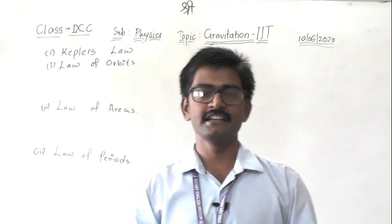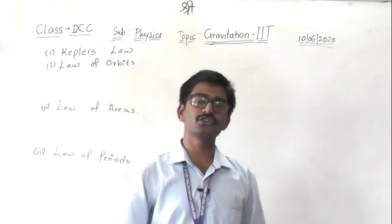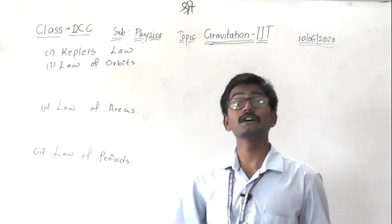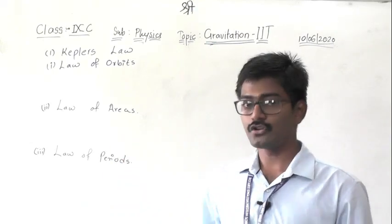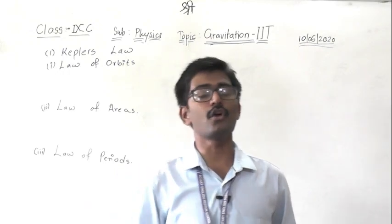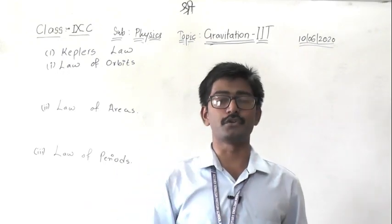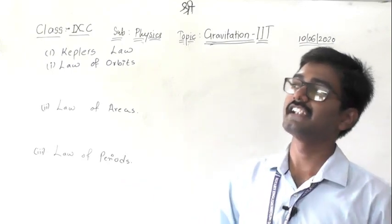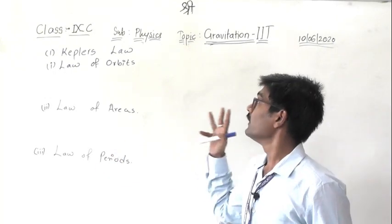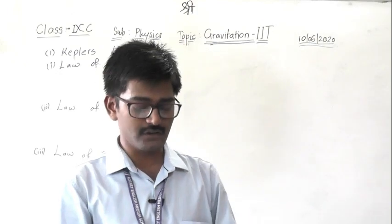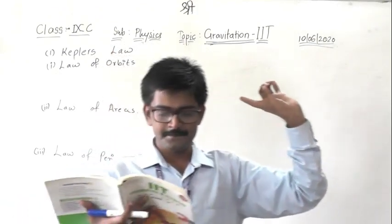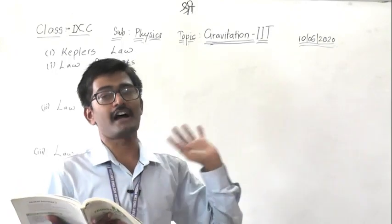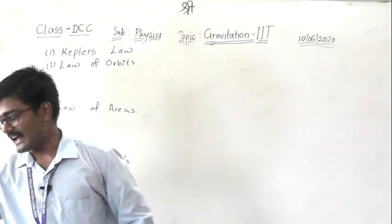Kepler's laws were very defining in the whole understanding of gravitation — they paved the way for Newton's universal gravitational law. Kepler worked with Tycho Brahe his entire life, observing and studying, and came out with three laws. The first law is called the Law of Orbits: all planets move around the sun in elliptical orbits with the sun located at one of its foci.